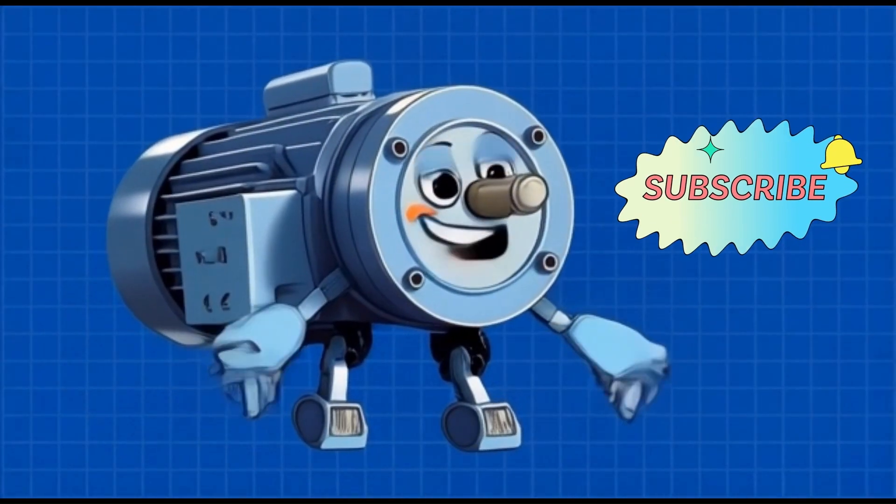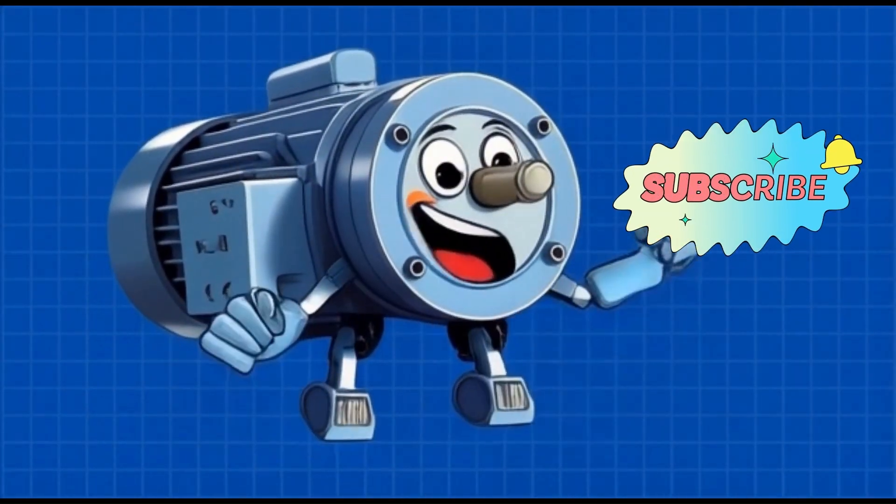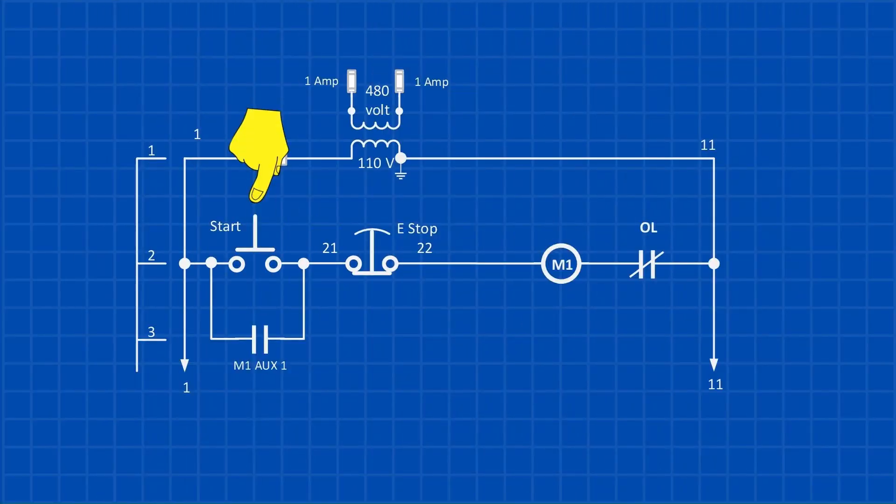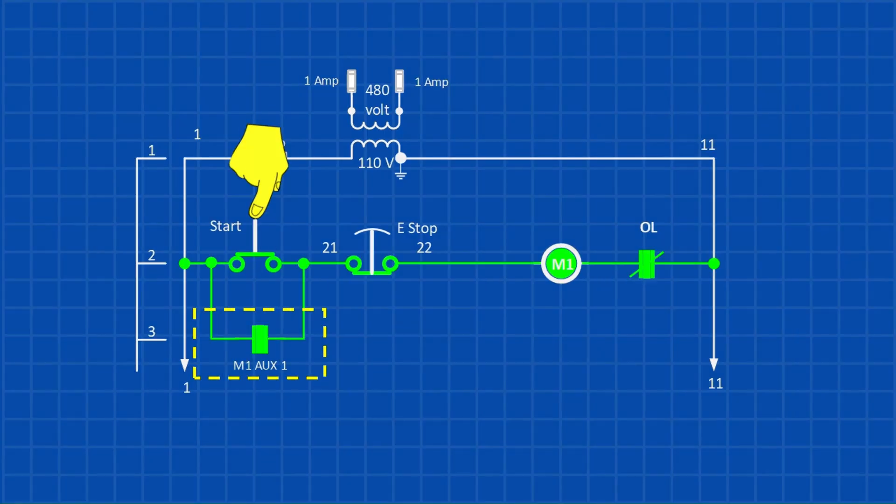If you haven't subscribed yet, go ahead and hit that subscribe button and give us a thumbs up. A motor starter control circuit uses what's known as a latching circuit. A latching circuit keeps the motor starter energized even after the initial start signal is removed. It works by using one of the motor starter's normally open auxiliary contacts, which is wired in parallel with the start button. When you press the start button, it energizes the M1 coil, closing the auxiliary contact. This contact then continues to supply power to the coil even after you release the start button. The motor starter coil stays energized, or latched, until you press a separate stop button, which is wired in series with the circuit.